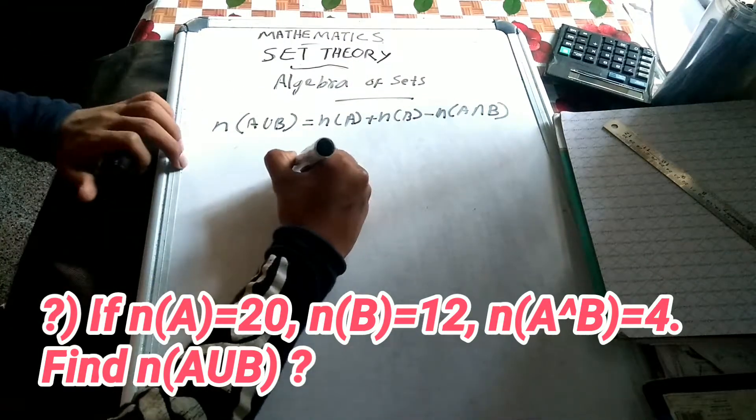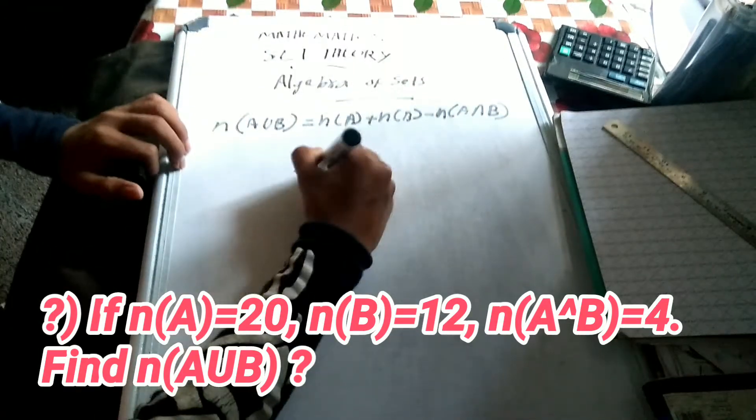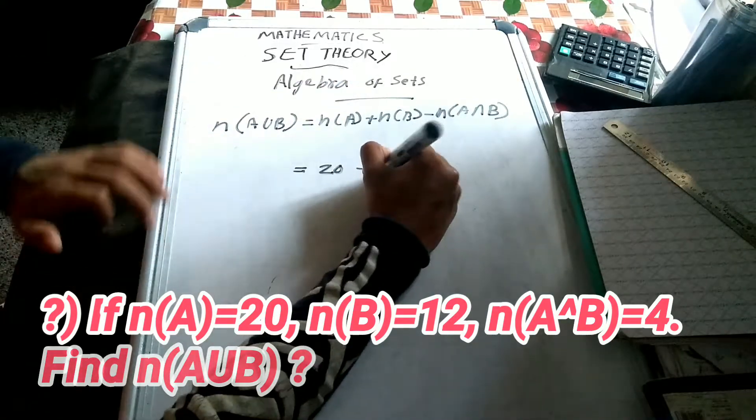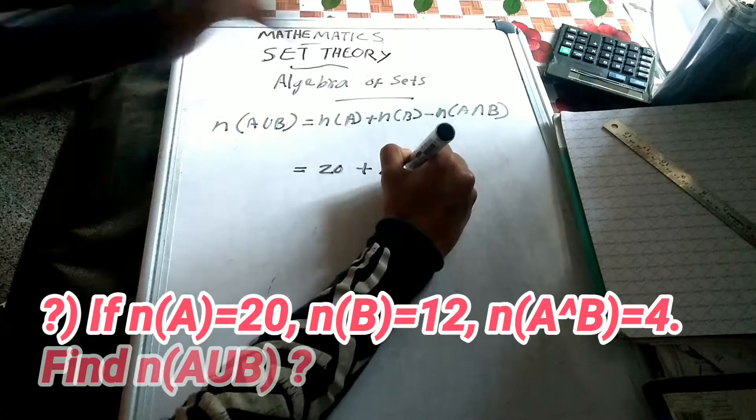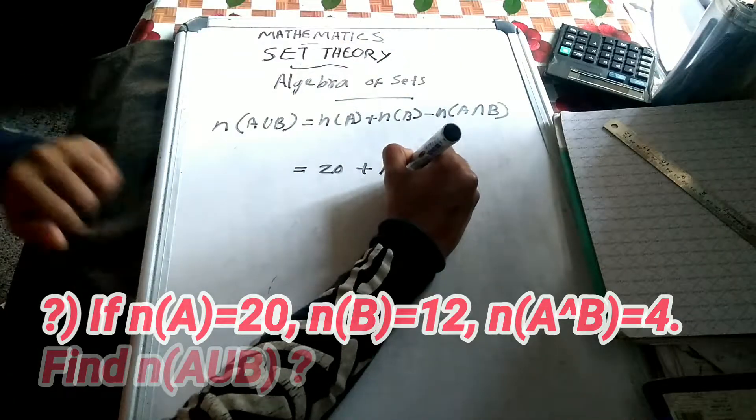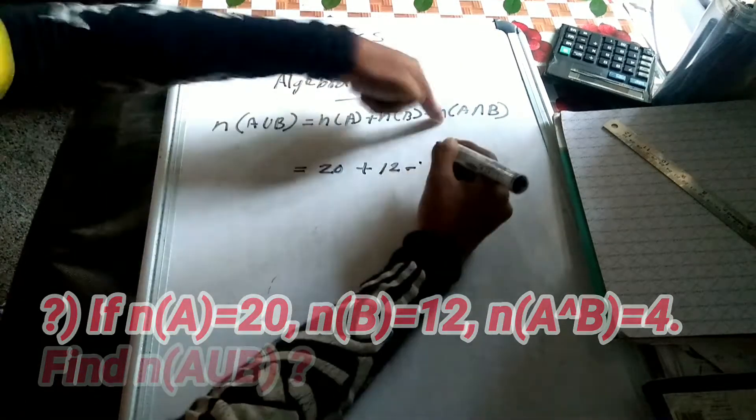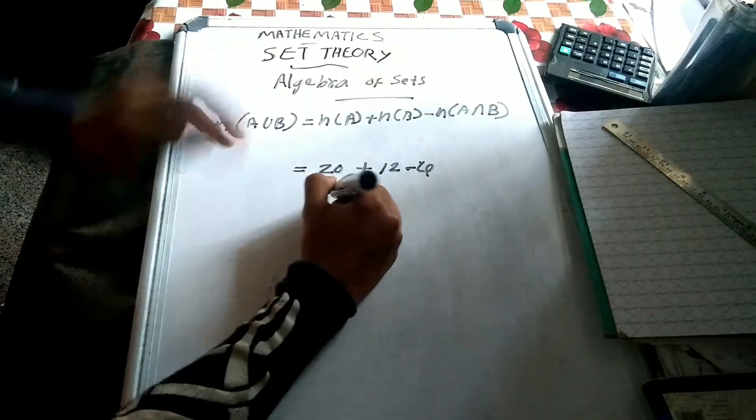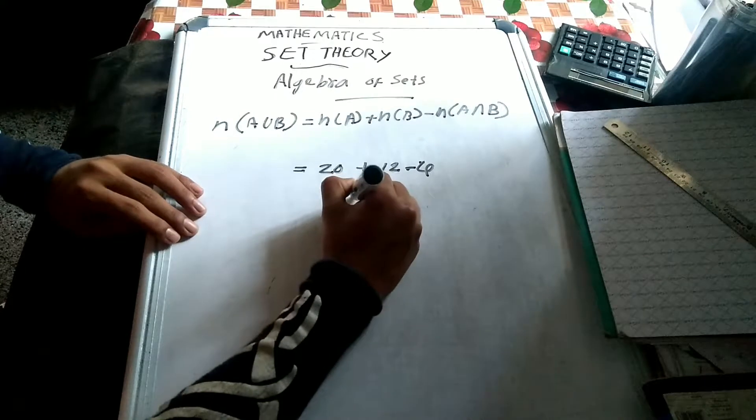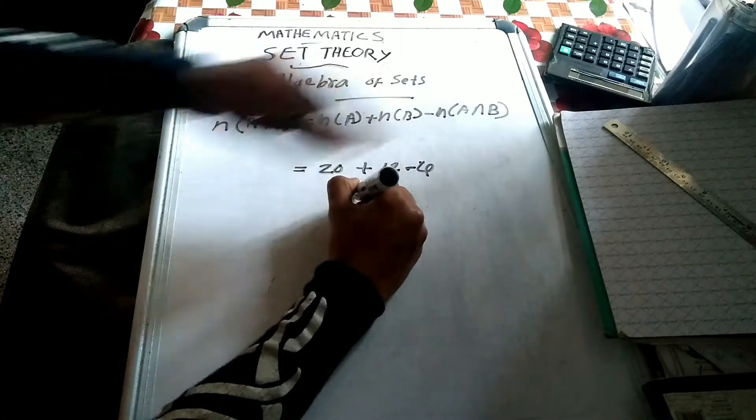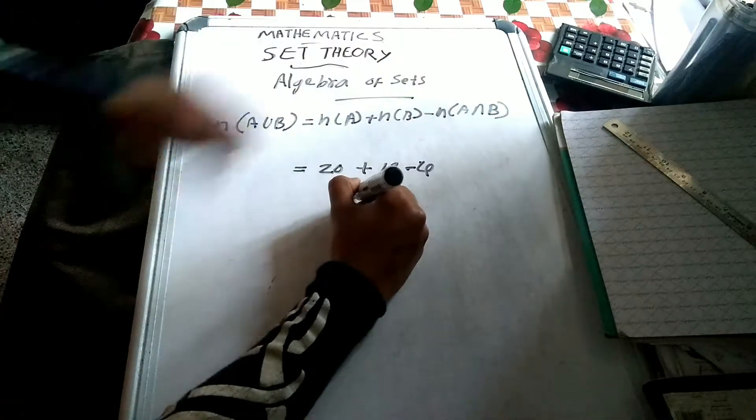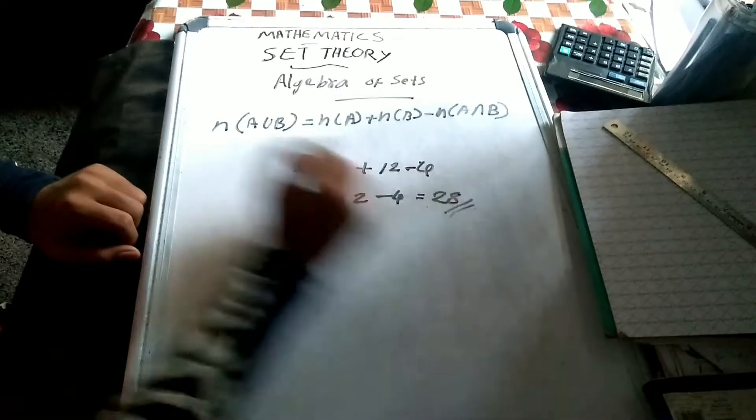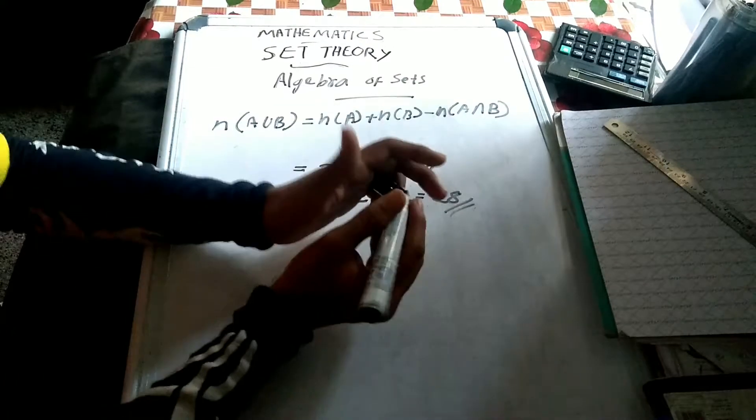So n(A) is equal to 20, plus n(B) which is 12, minus n(A intersection B) which is 4. So that gives us 32 minus 4, which equals 28. So n(A union B) equals 28.